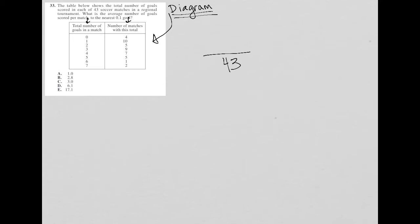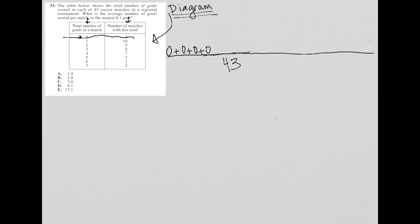Here's where this table becomes extremely valuable. I'm going to extend my line because I need a lot more space. Remember, the first row means there are four matches with a total of zero goals. So for the average I'd have zero plus zero plus zero plus zero — that takes care of the first row. And because there are 10 matches with one goal, I'd have 10 ones, which I'll write as 10 times one.